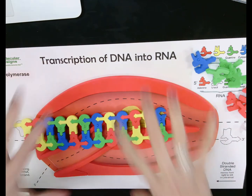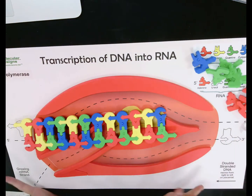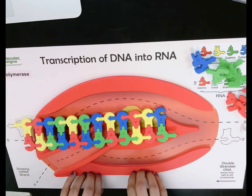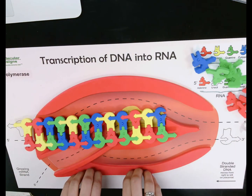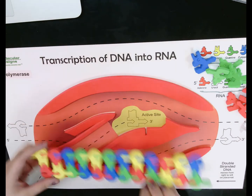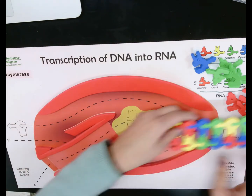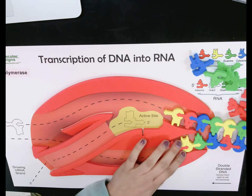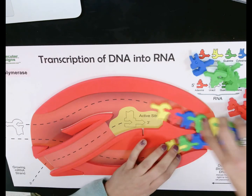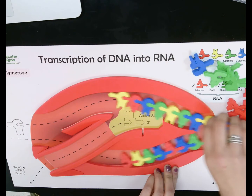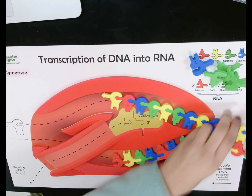This particular red blob right here is actually the enzyme RNA polymerase. RNA polymerase does two separate things: it first splits the DNA, and it also adds those complementary nucleotides.